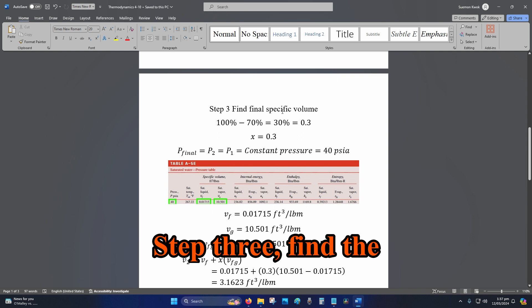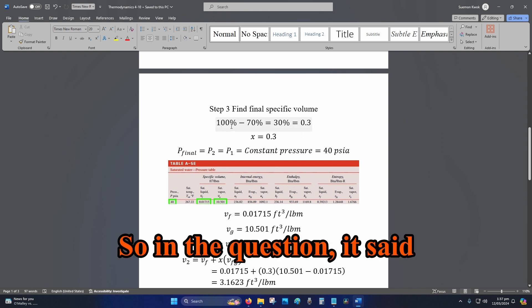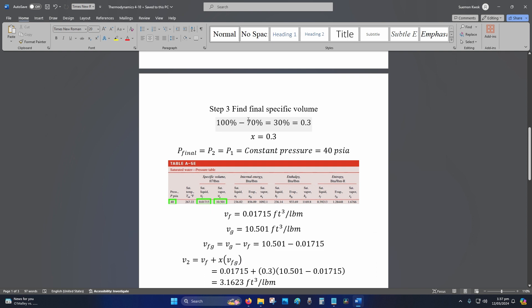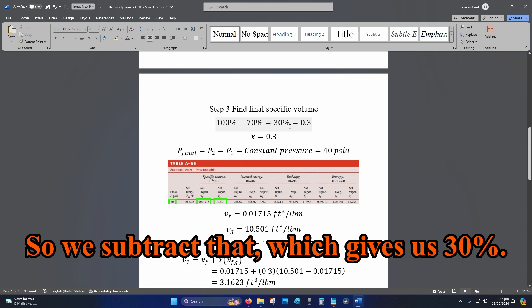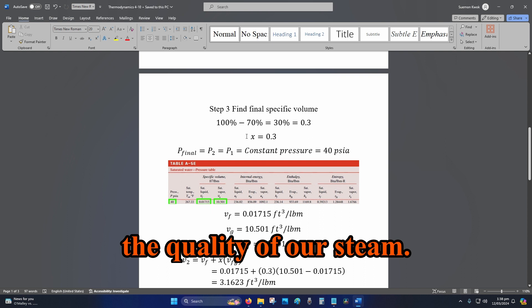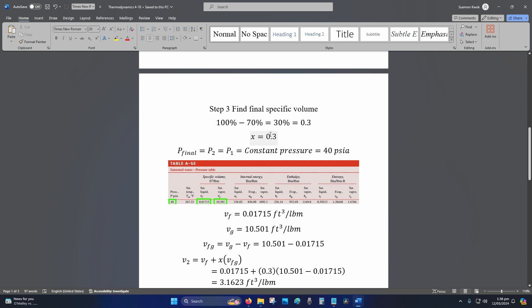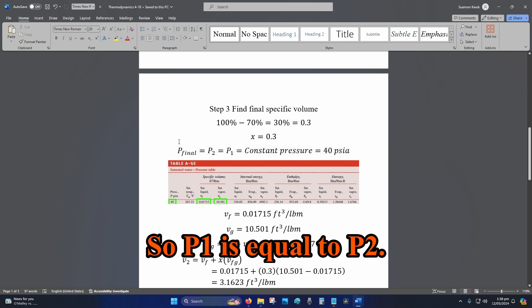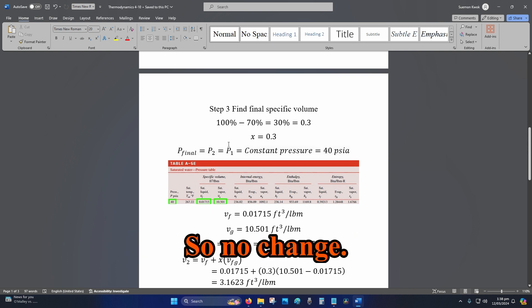Step 3, find the final specific volume. In the question, it said the mass condenses to 70%, so we subtract that, which gives us 30%. So that's 0.3, which is the quality of our steam. We know that it is at constant pressure, so P1 equals P2. So P final equals 40 psi, no change.